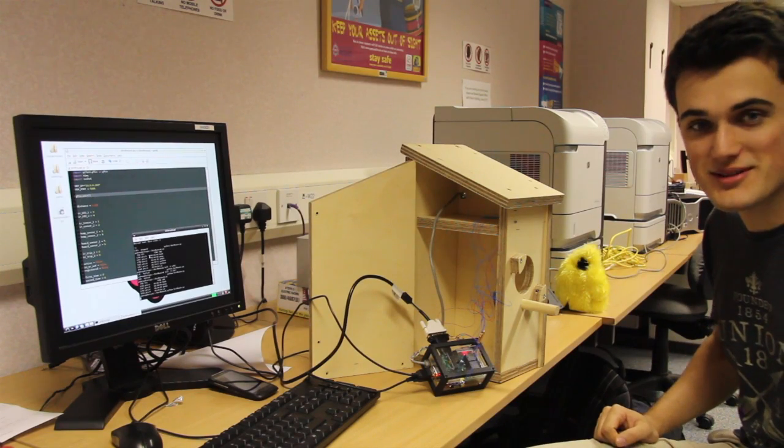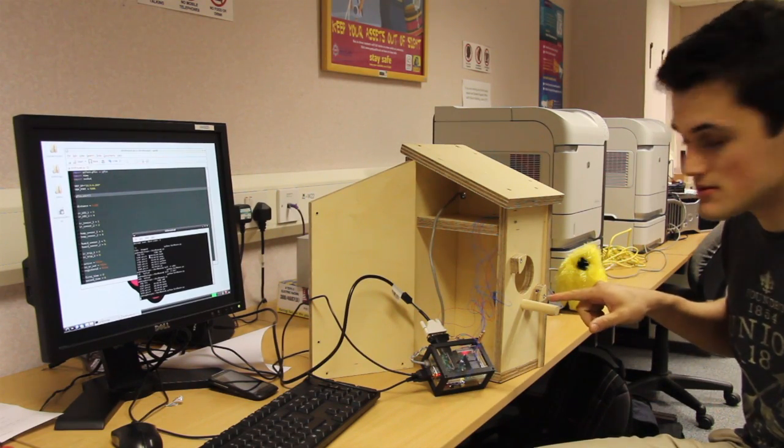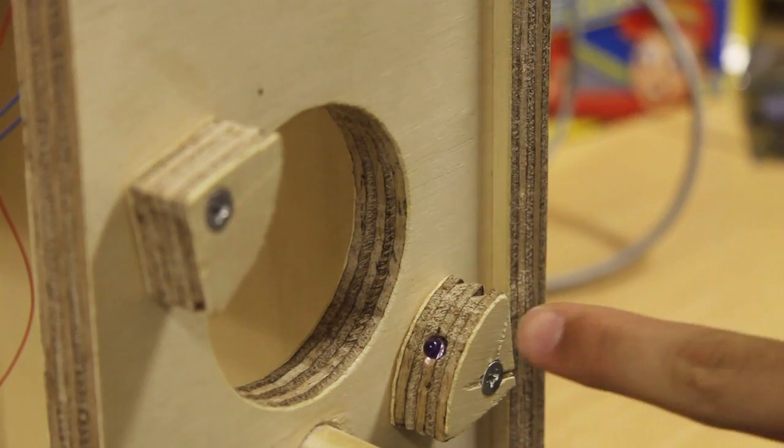Okay here we have the Pi-Face bird box. We have two infrared tripped beams essentially. We've got an infrared LED on the outside and an infrared LED on the inside and then two detectors as well.